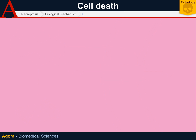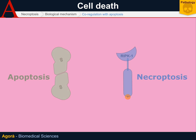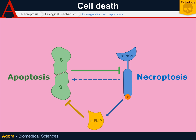Necroptosis is completely independent from apoptosis, yet the two types of cell death regulate each other. Caspase-8 is capable of inhibiting RIPK1, and similarly RIPK1 is capable of activating c-FLIP, which blocks caspase-8. However, RIPK1 expression also increases caspase-8 expression. Apparently, the inhibitor of apoptosis protein — IAP — is capable of blocking both apoptosis and necroptosis.